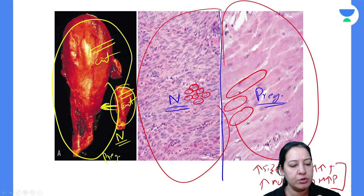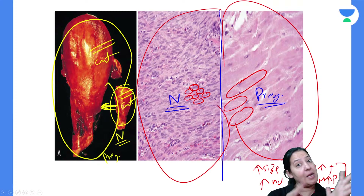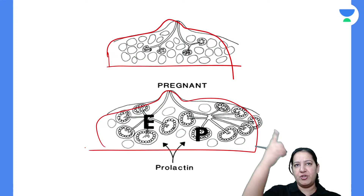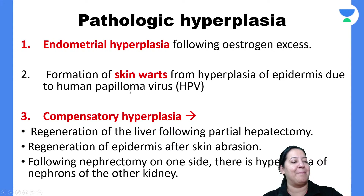A question was asked: is growth after partial resection also an example of hyperplasia? Yes — that comes under pathological hyperplasia, which I will cover next. The Robbins diagram also shows the normal breast and the breast during pregnancy — appreciate the increase in number of cells. Now let's move to pathological hyperplasia.